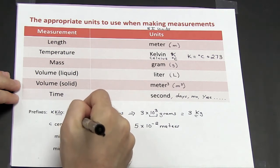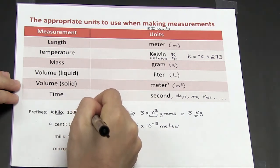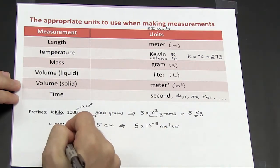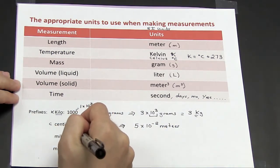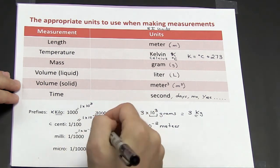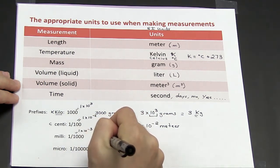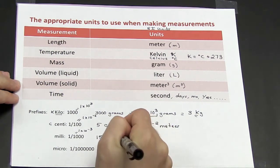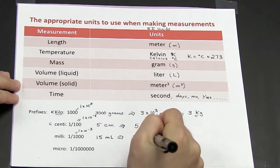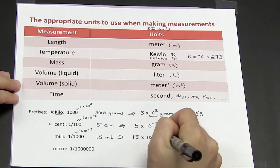So if I have 15 milliliters, that is the same thing as 15 times 10 to the minus 3 liters.